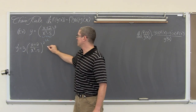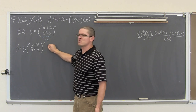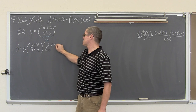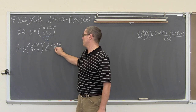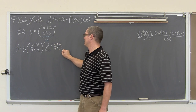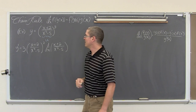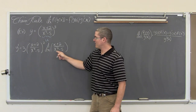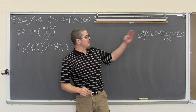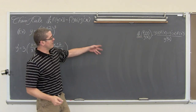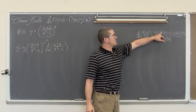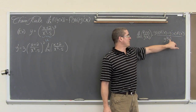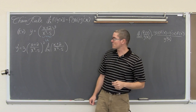We are going to show all the work — the derivative with respect to x of x plus 2 over x squared minus 5. To finish up this chain rule, I have to find the derivative of a quotient. The derivative of a quotient is the denominator times the derivative of the numerator, minus the derivative of the denominator, all over the denominator squared.